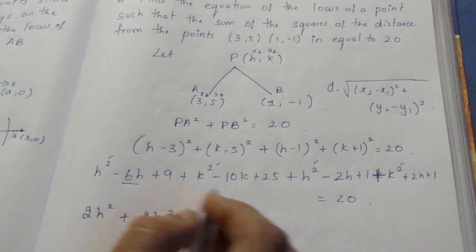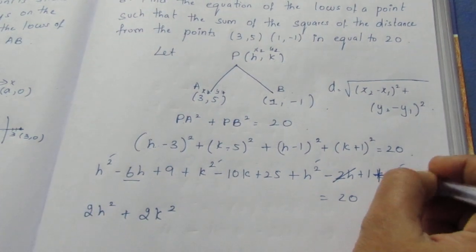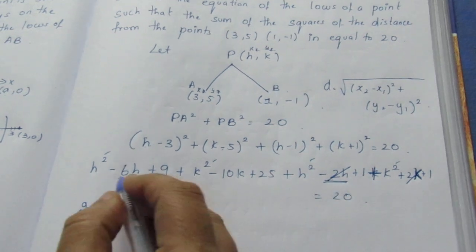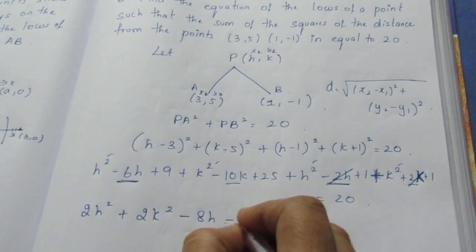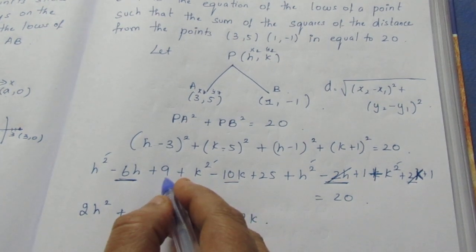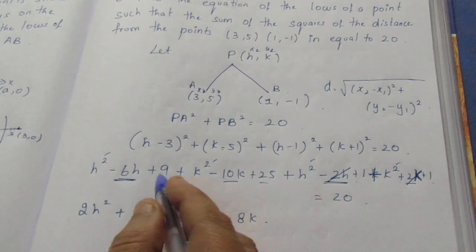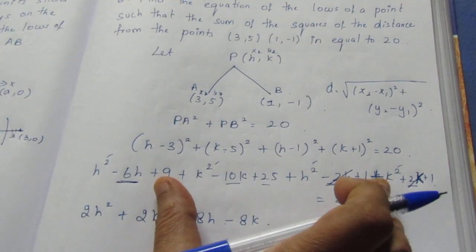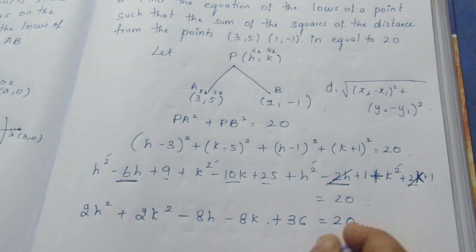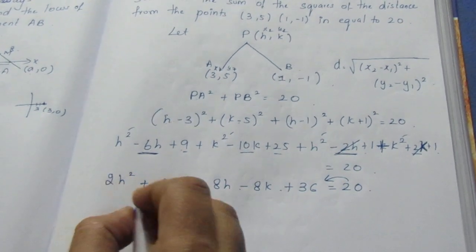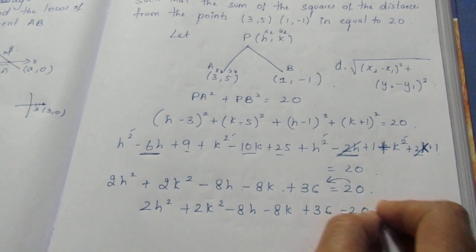Collecting like terms: 2h² + 2k² for the squared terms. For h terms: -6h - 2h = -8h. For k terms: -10k + 2k = -8k. The constants: 9 + 25 + 1 + 1 = 36. So we get 2h² + 2k² - 8h - 8k + 36 - 20 = 0.